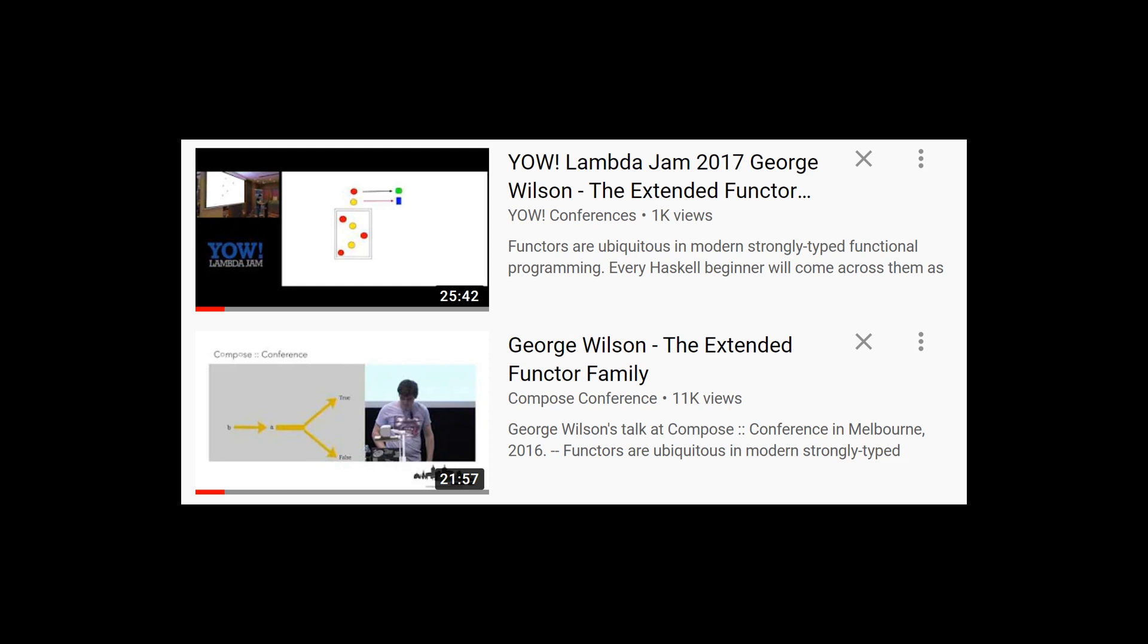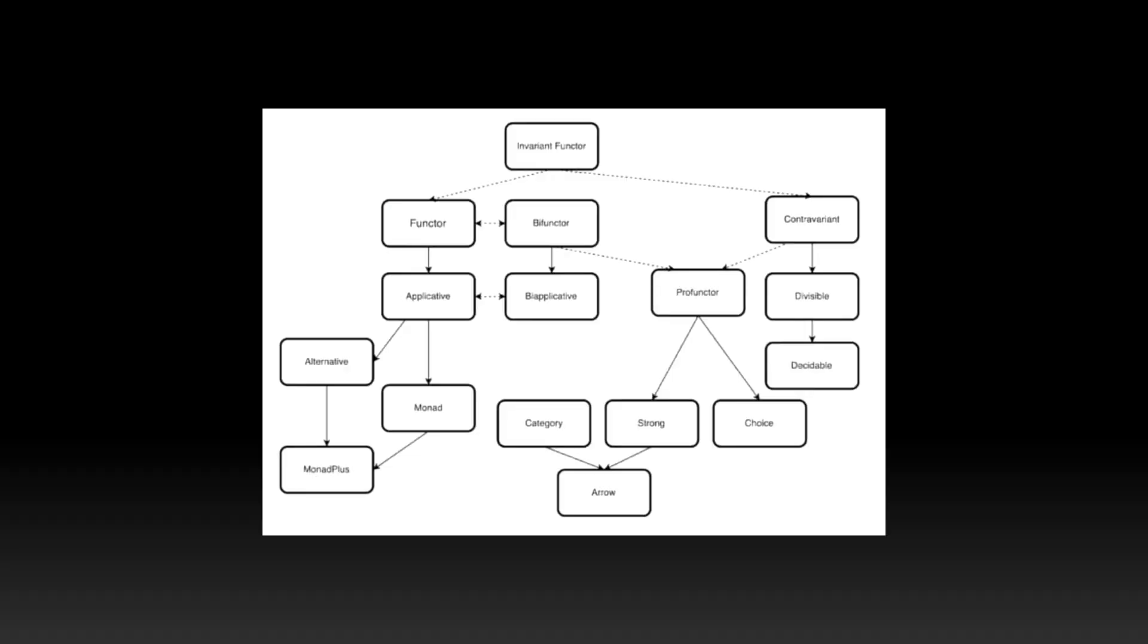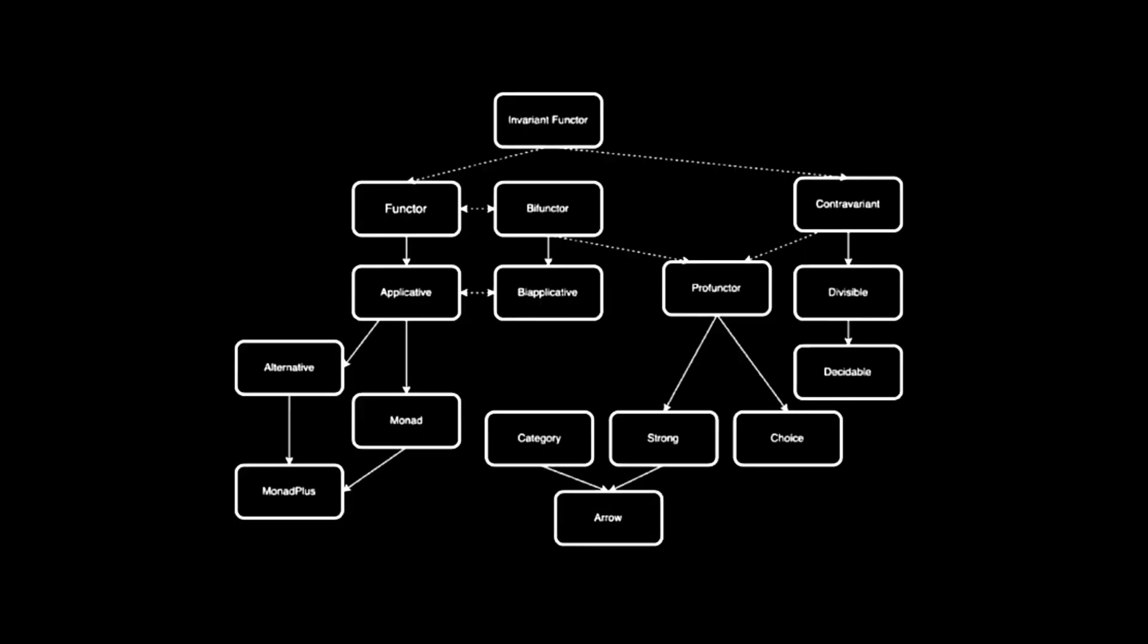In his talk, there is a diagram that shows the functor family. So if we switch this to dark mode and enhance it, it's a little bit more legible now. I'll read through them. It starts with invariant functor at the top, and then going down to the left: bifunctor, functor, applicative, bi-applicative, alternative, monad, and monad plus.